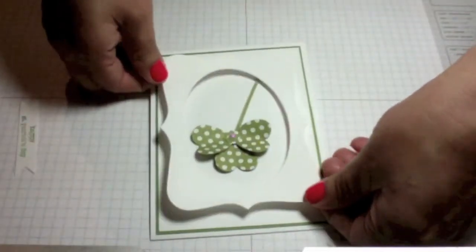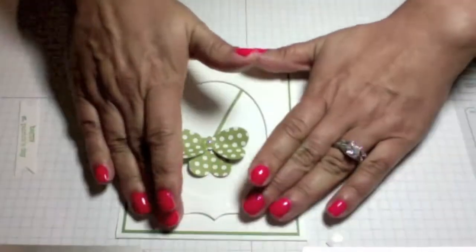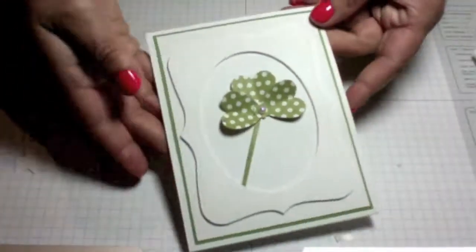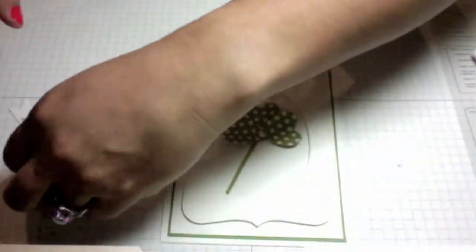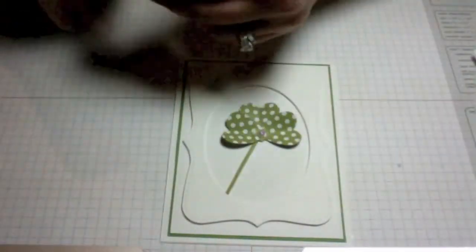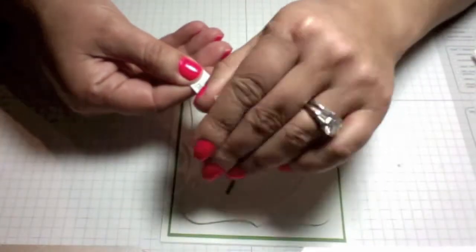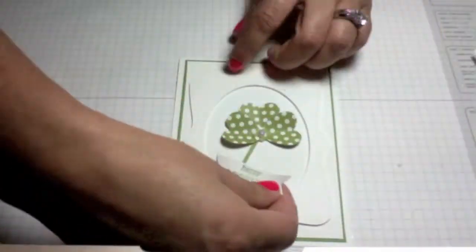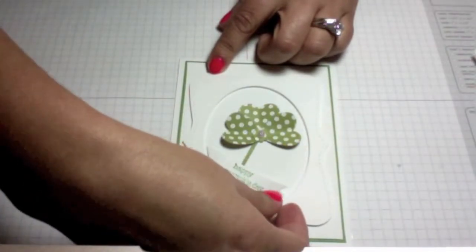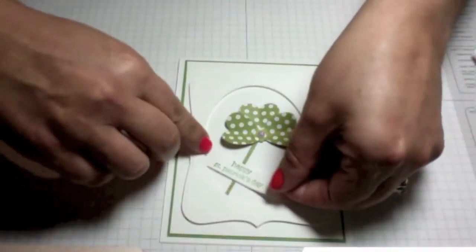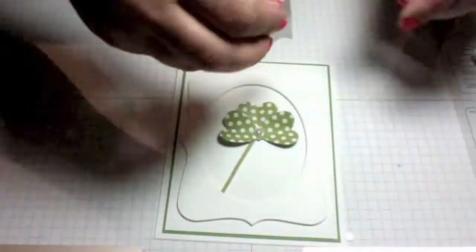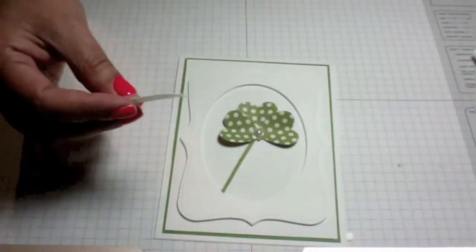Now I'm going to take the sentiment here and kind of want it to be placed a certain way. Let me use a glue dot for this one. I'll go ahead and use a glue dot. The links to all of the products I used will be down in the description box below.